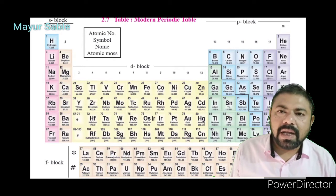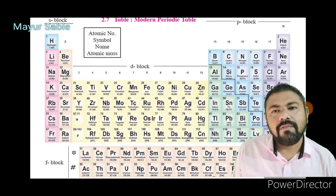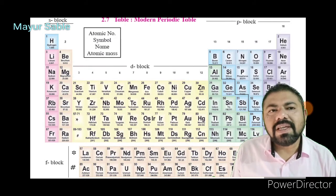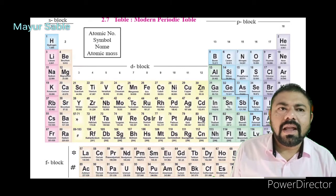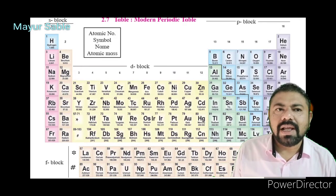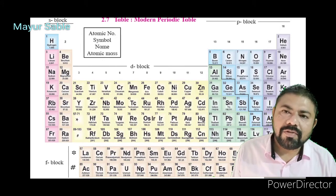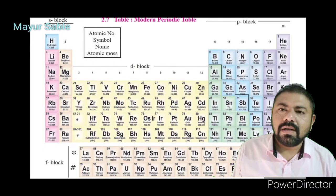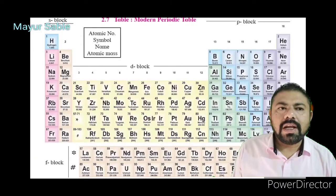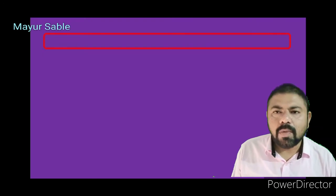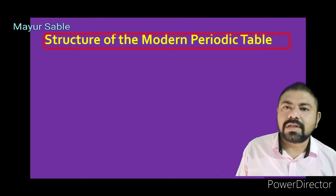However, the ambiguity in giving a position to hydrogen was retained and not removed in the modern periodic table. The electronic configuration of an atom — the way electrons are distributed in shells around the nucleus — is determined by the total number of electrons, which is the atomic number. The relationship between atomic number and electronic configuration is clearly seen in the modern periodic table.